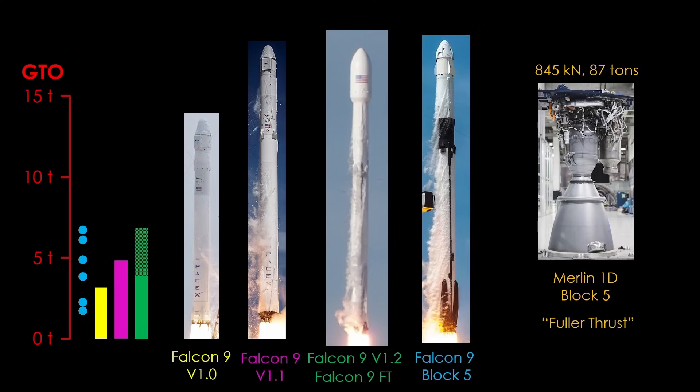The rocket is now the Falcon 9 block 5 that we are so familiar with. This final version pushes the reusable payload up to 5.5 tons and the expendable payload up to 8.3 tons when flying to geosynchronous transfer orbit. That covers the vast majority of geosynchronous satellites.